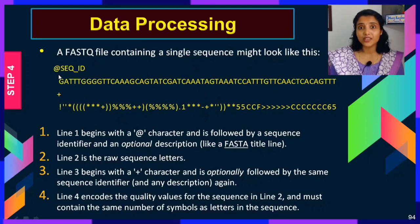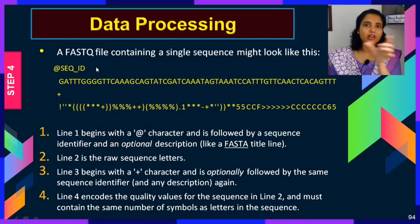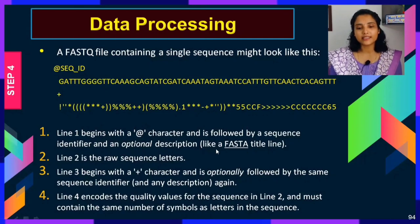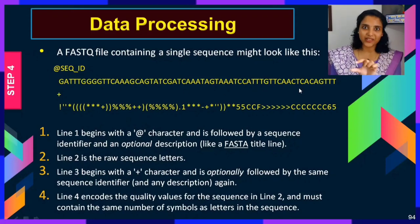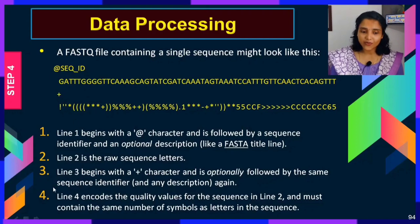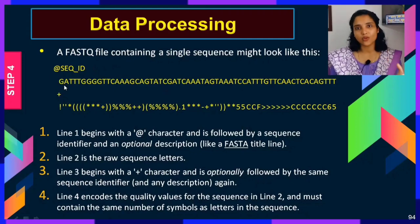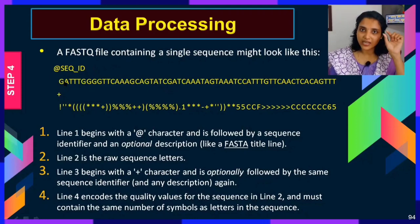Line one, shown in yellow, begins with the '@' character followed by a sequence identifier and an optional description, like a FASTA title line. Line two is the raw sequence — the actual order of your nucleotides, which also indicates your read length. Line three begins with a '+' character, optionally followed by the same sequence identifier. Line four encodes the quality values for the sequence in line two and must contain the same number of symbols as letters in the sequence.